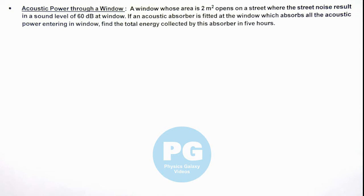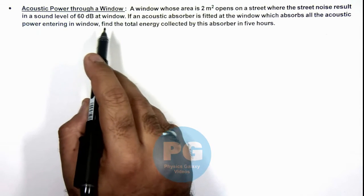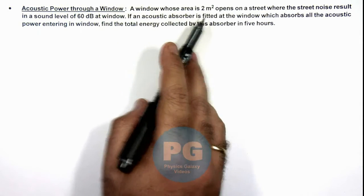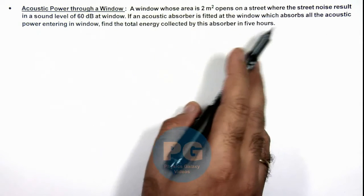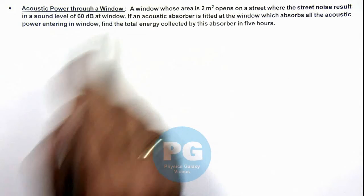In this illustration, we'll discuss about acoustic power through a window. We are given that a window whose area is 2 meter square opens on a street where the street noise results in a sound level of 60 decibel at window.